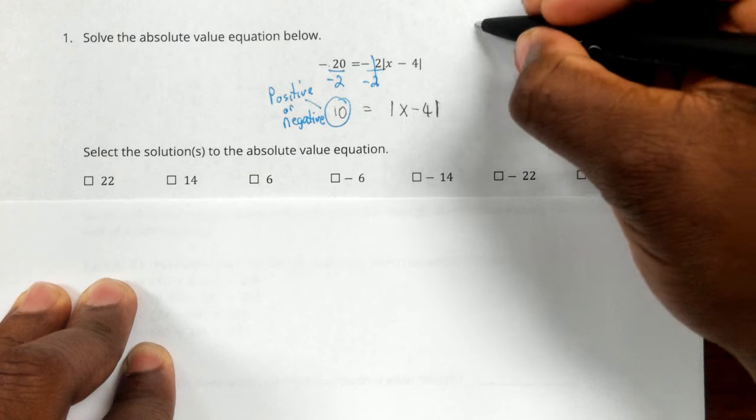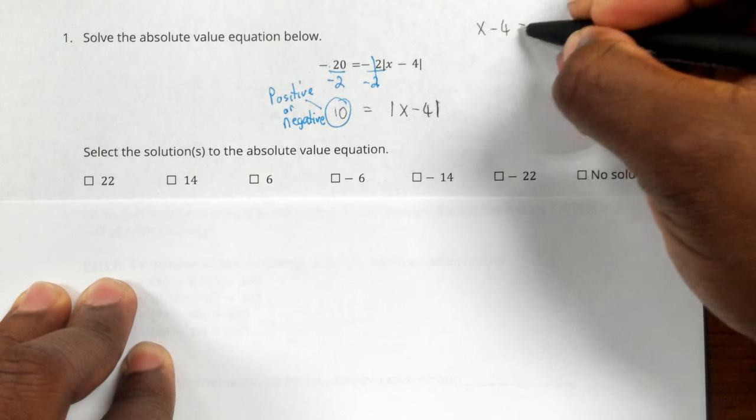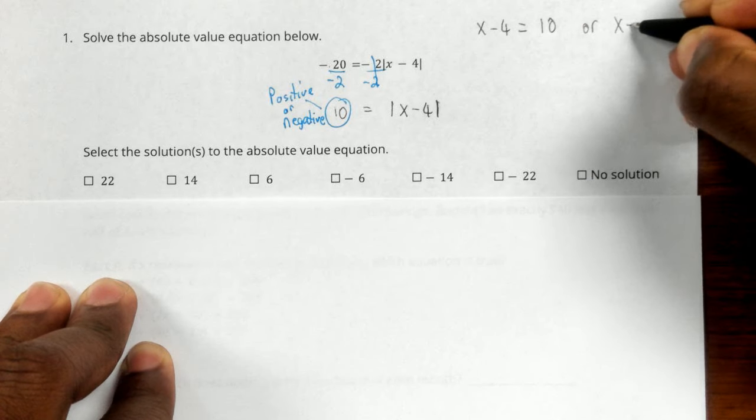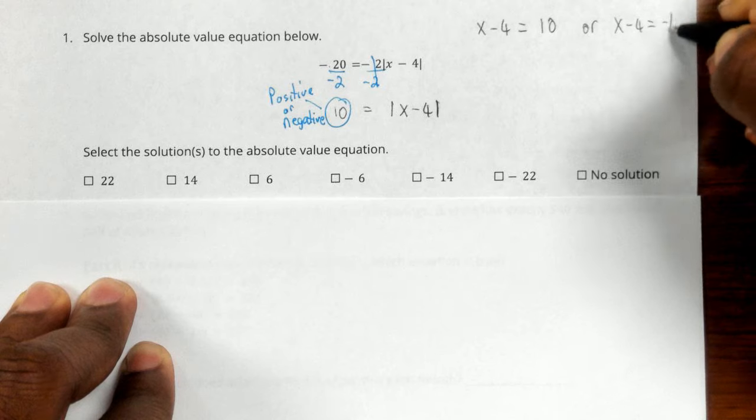So we're saying that x minus 4 could be equal to a positive 10, or x minus 4 could be equal to a negative 10.